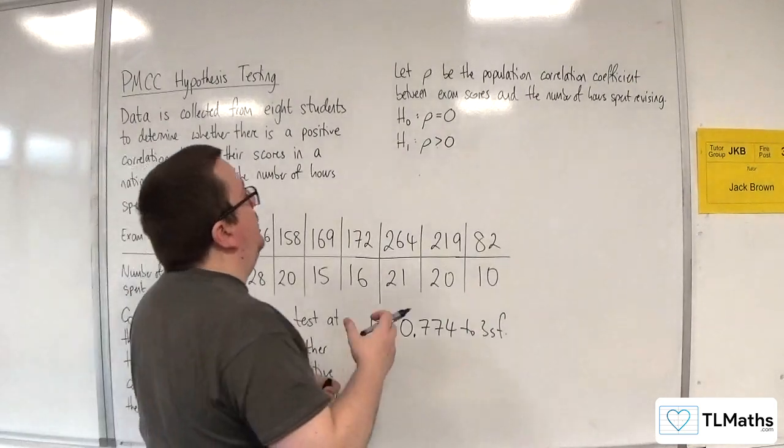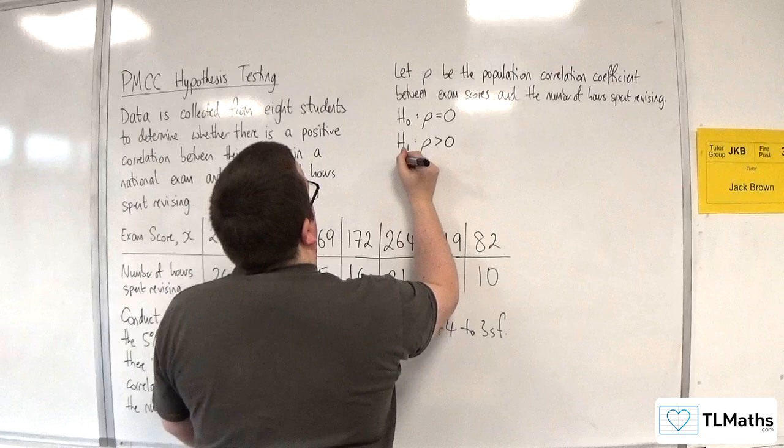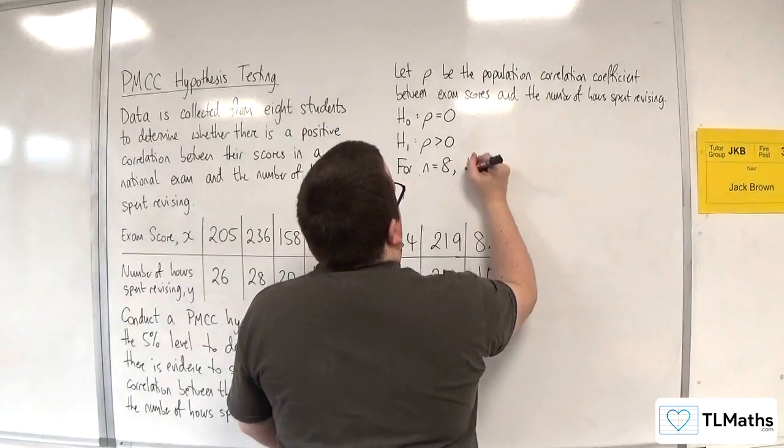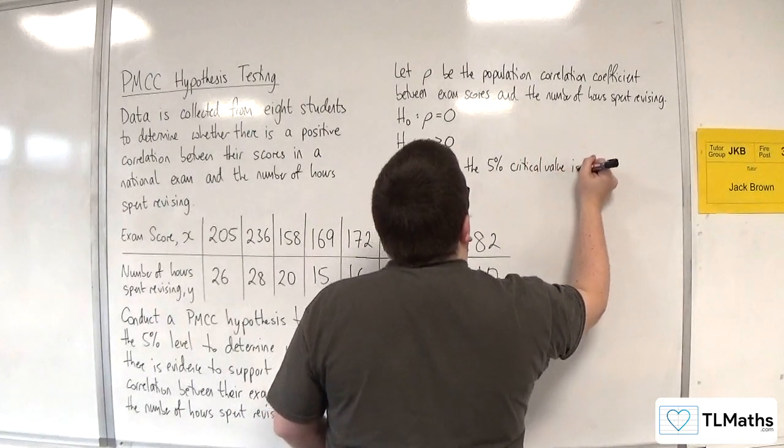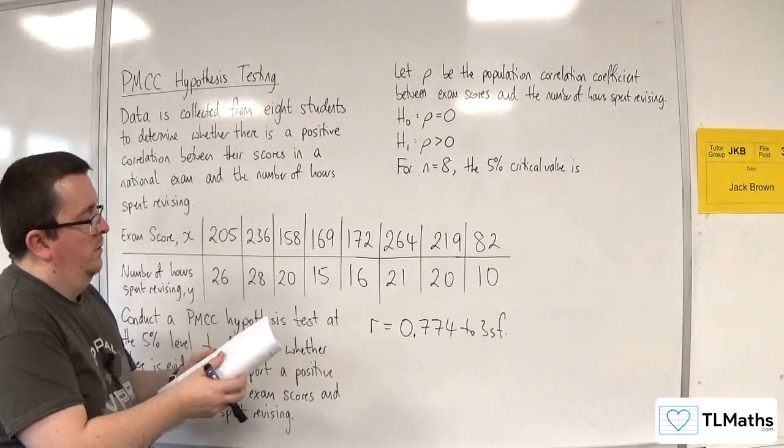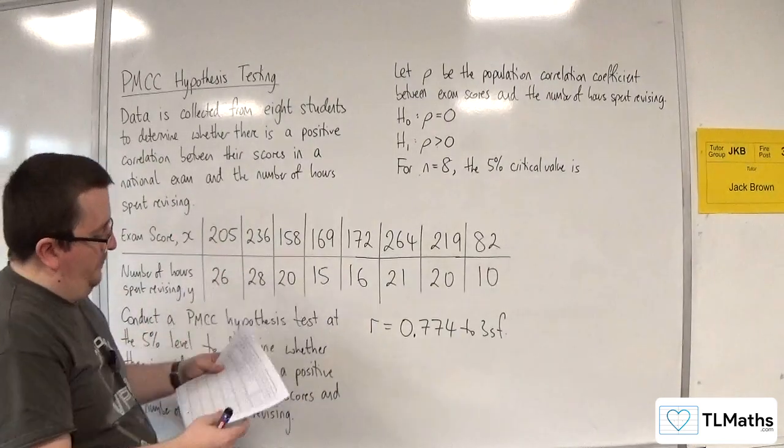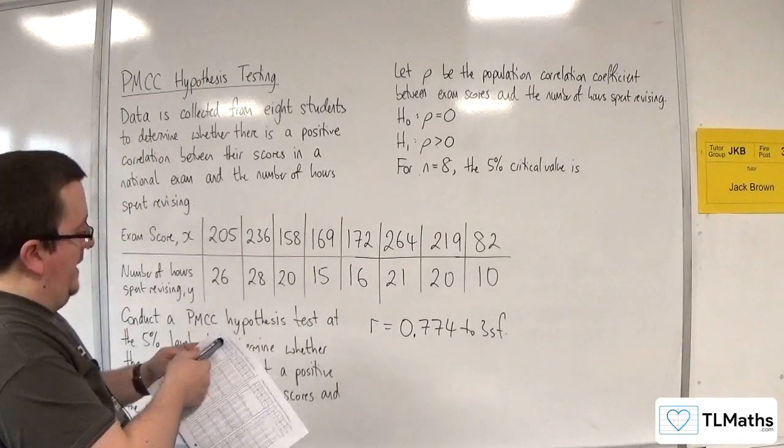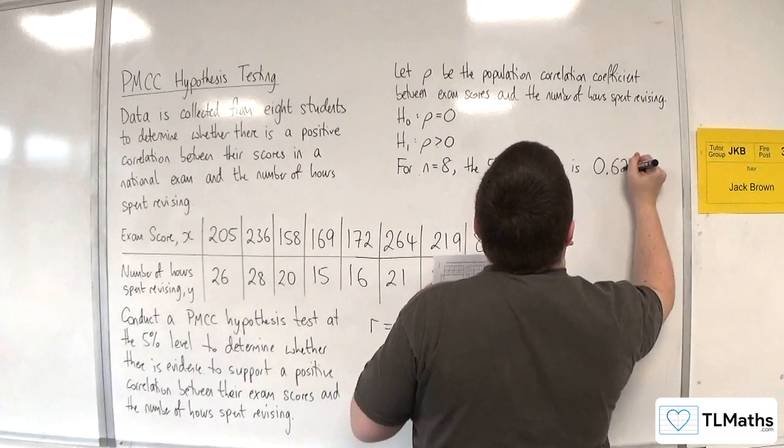Okay, now we need to find the critical value. So as part of my hypothesis, what I'm writing down, I would say that for N is equal to 8, because there's 8 bits of data, where the 5% critical value is, now this is where you need to go to your tables. So on page 12 of the tables, left-hand side, and you need a one-tailed test at 5%. So we're going right to the left-hand side, then we're going down to N is equal to 8, and we get 0.6215. So 0.6215.